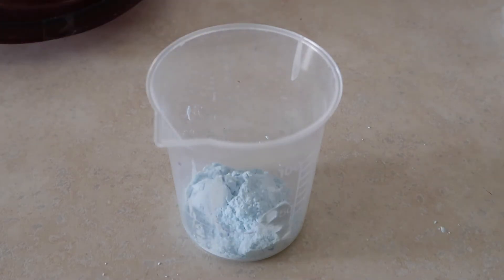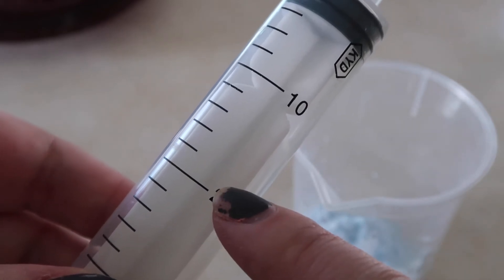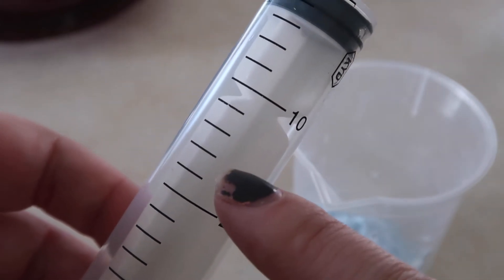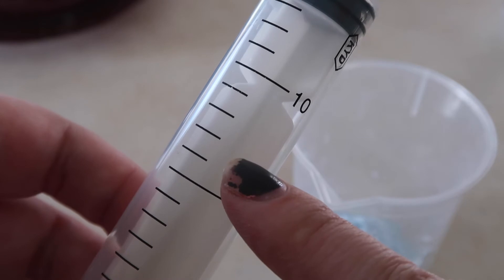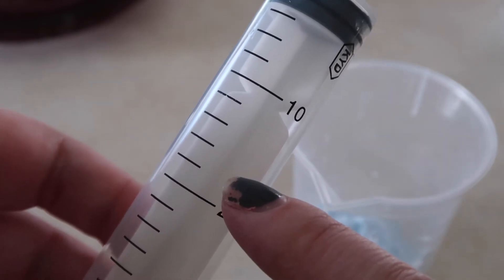Next, suck up 18 mils of water into the syringe and put it into the beaker. So, 10 mils is here, 20 mils is here, and 18 mils will be right about here.